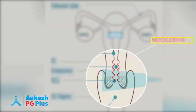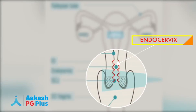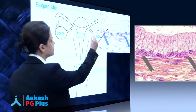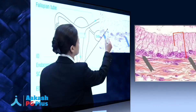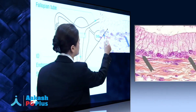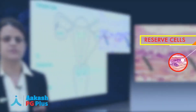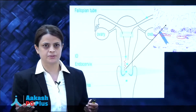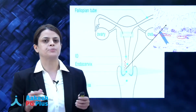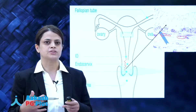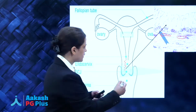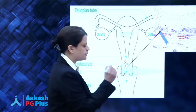The endocervix is lined by simple columnar epithelium, which consists of tall columnar cells with basal nuclei. Just beneath the cells are reserve cells. The function of these reserve cells is to give rise to new columnar cells as the old ones are shed off. The reserve cells are also bipotential, which means that under special conditions they can give rise to squamous epithelial cells.